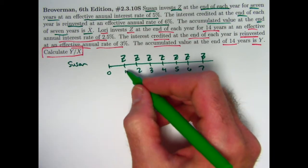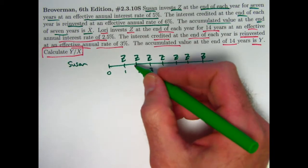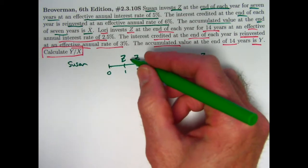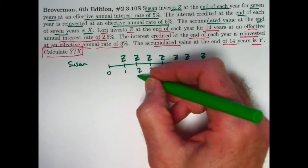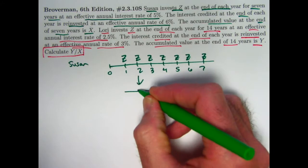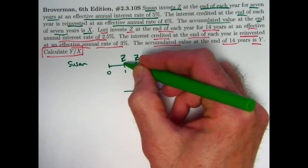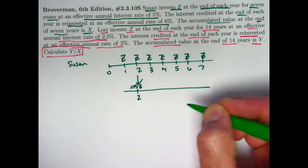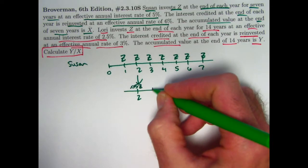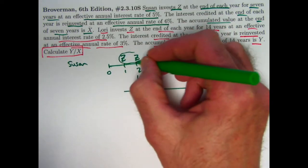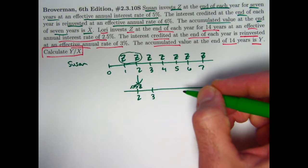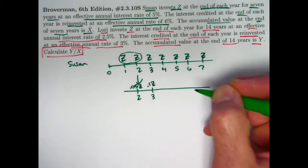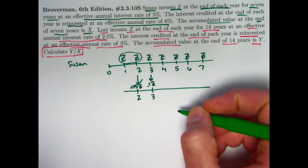At time 2, right before she makes her second deposit, she's going to reinvest the interest she earns between time 1 and time 2 in a new account. At time 2, how much is that interest? Well, Z is sitting there from time 1 to time 2, 5% of Z is 0.05Z. So that's the amount that she invested in this different account at time 2. From time 2 to time 3, she's got 2Z in the account that is earning interest. 5% of 2Z is 0.1Z, and that's what gets reinvested in this different account at time 3.